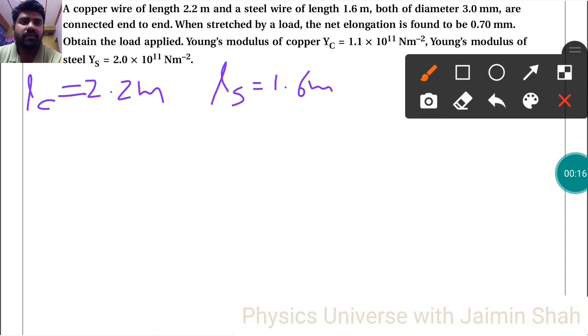Both of diameter 3 mm are connected end to end. So both have diameters Dc and Ds, both are same, and it is 3 into 10 raised to minus 3 meter.